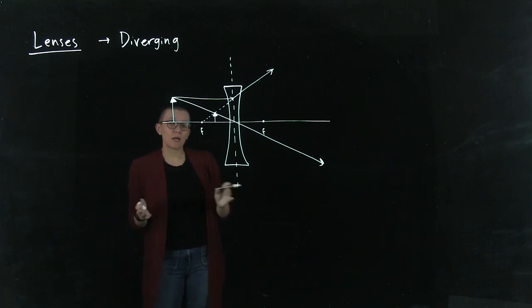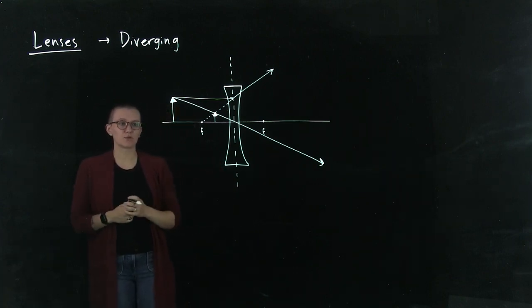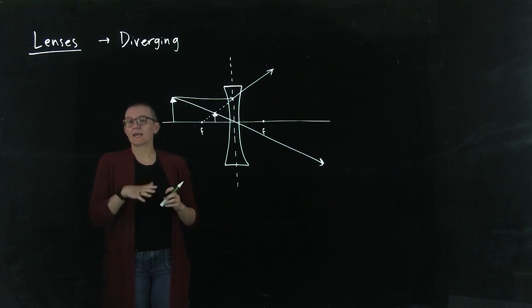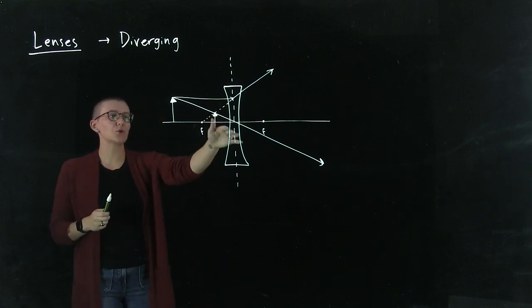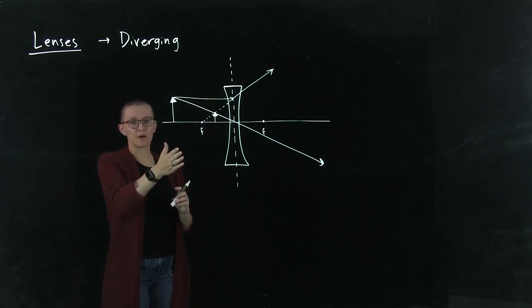There is another ray you can draw that will help you sometimes. I'm going to draw it here just so you can see what it looks like, but it may not necessarily always help you. Remember, you only need two intersecting rays to figure out where a point is.